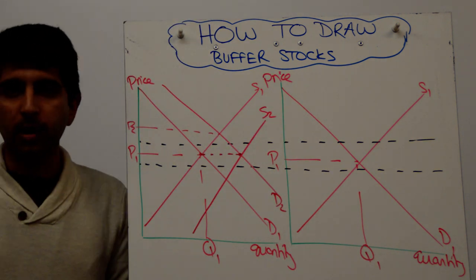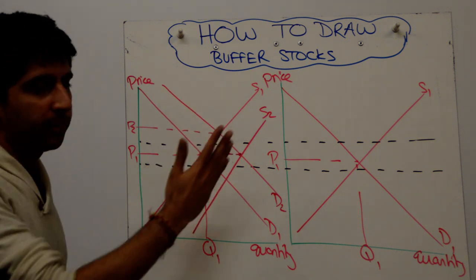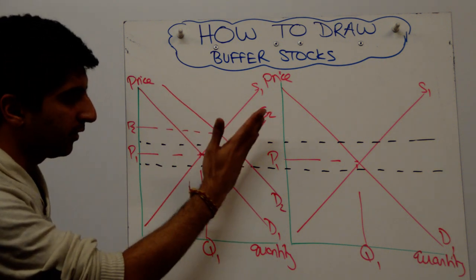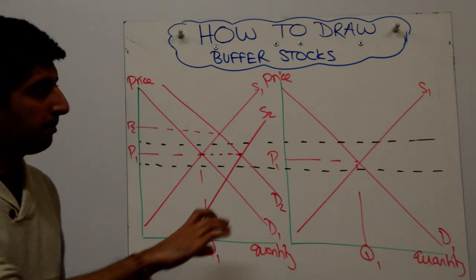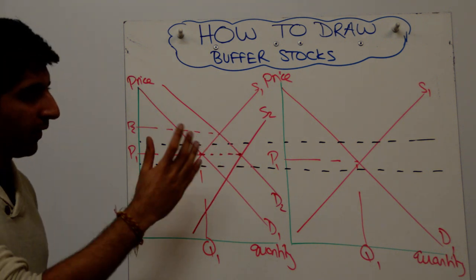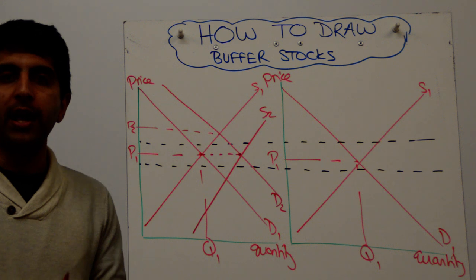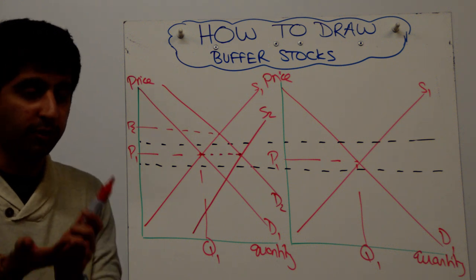So if ever a primary commodity was under pressure rising in value, governments can release supply, shifting supply to the right and getting back to P1, back within the band that's allowed. So that's how you can show the impact of a buffer stock if ever the price of a commodity was under pressure of rising.